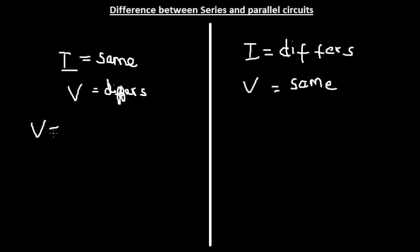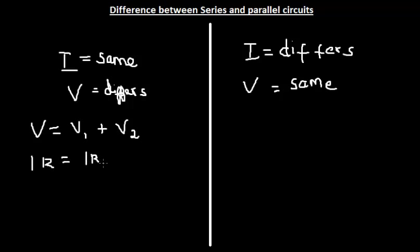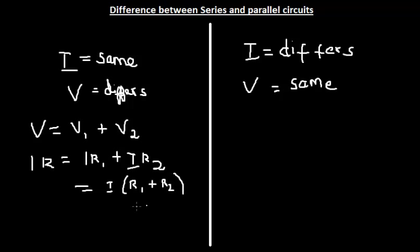In a series circuit, the net potential difference is V = V1 + V2, where V1 is the potential difference across the first bulb and V2 is the potential difference across the second bulb. Using the relation V = IR, we substitute: V = IR, V1 = IR1, and V2 = IR2.